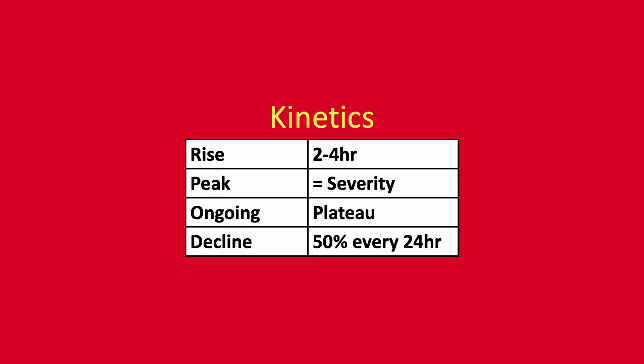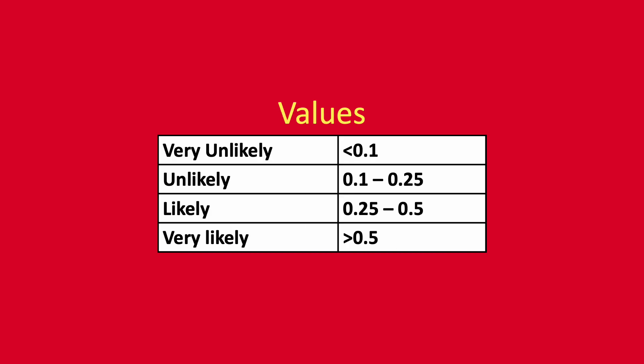Procalcitonin rapidly rises over two to four hours, with the peak of procalcitonin level relating to the degree of insult — the higher the insult, the higher the peak. If there's ongoing insult, there may be a plateau in the level of procalcitonin, and it declines by 50% every 24 hours. The FDA has approved procalcitonin-based algorithms to aid decision-making for the diagnosis and treatment of low-risk potential infections with antibiotics. The values shown are in micrograms per litre, and based on the value of the procalcitonin, that can relate to the probability of a bacterial infection.